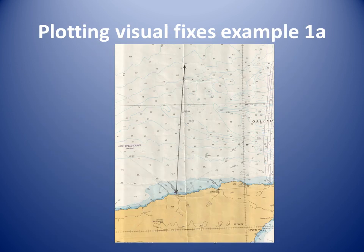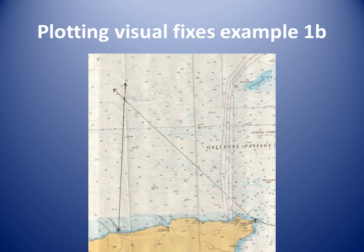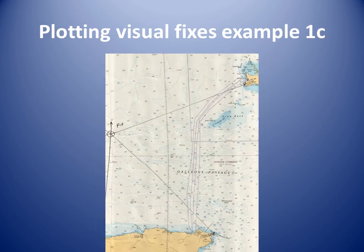A navigator off the north coast of Trinidad takes three quick visual bearings of charted lights and corrects the bearings for compass error. The bearing of Petite Marianne Point light is 184 degrees true. The bearing of Galera Point light is 137 degrees true. The bearing of a light on the other side of the Galleon's Passage is 070 degrees true.